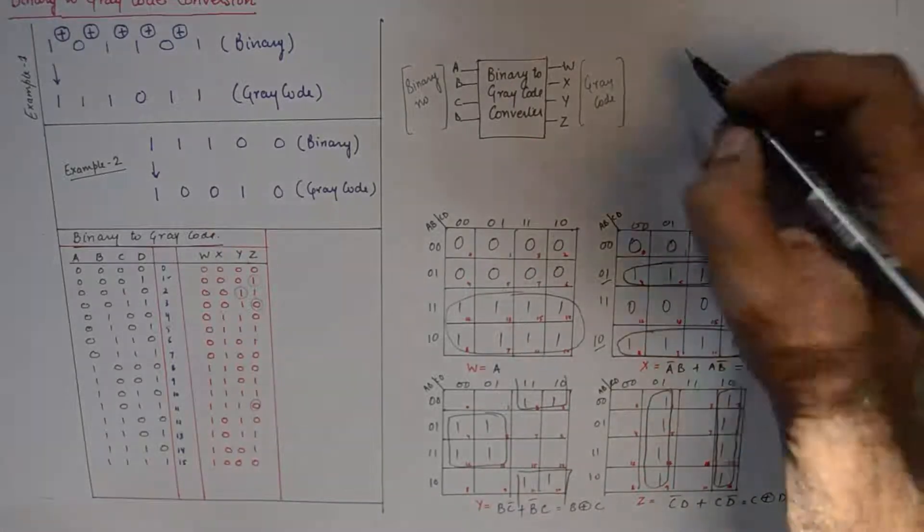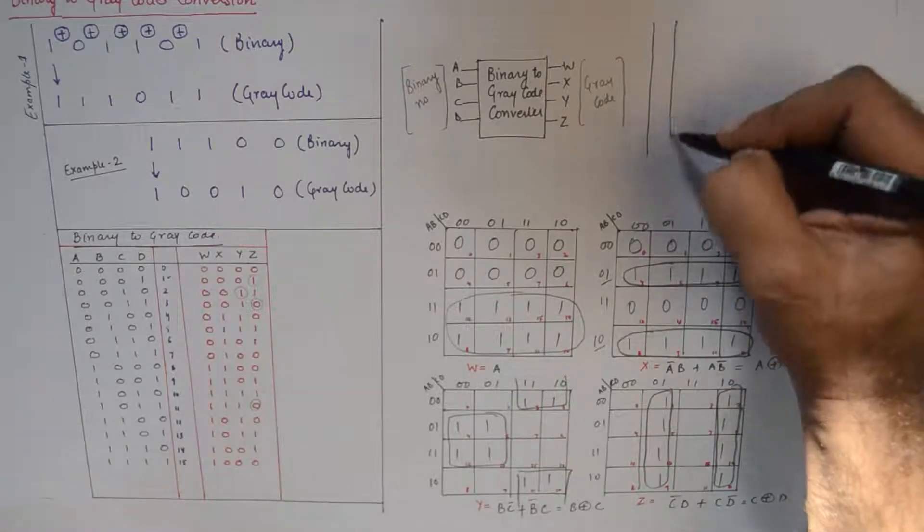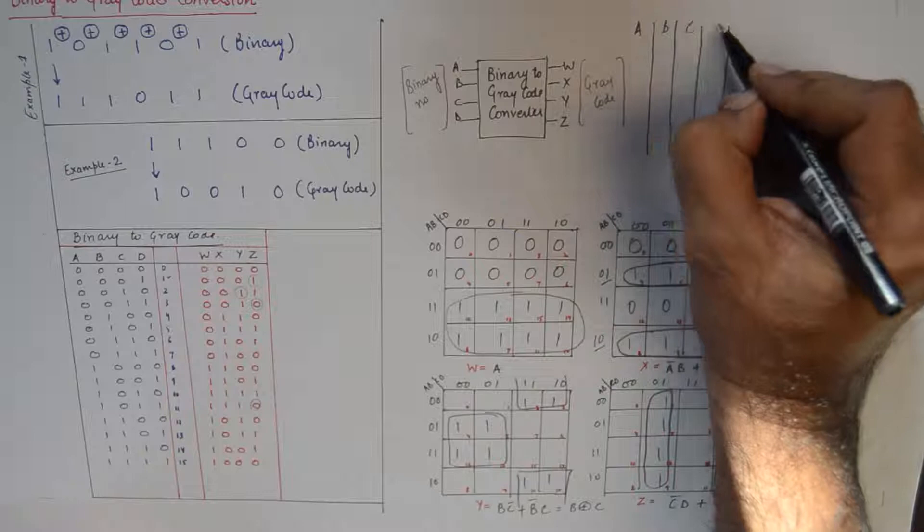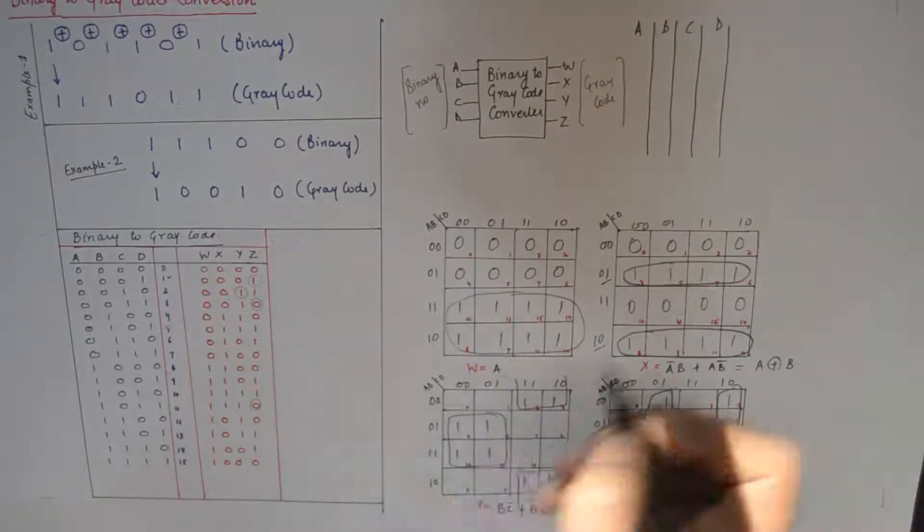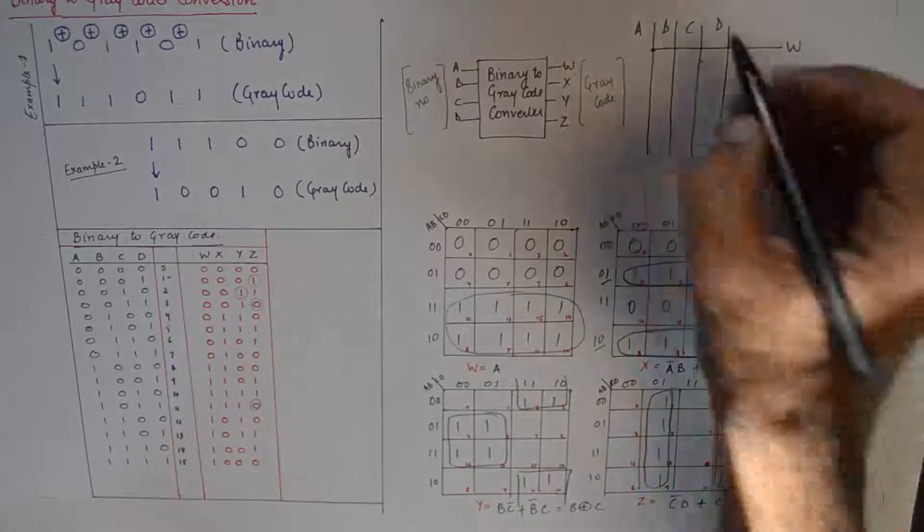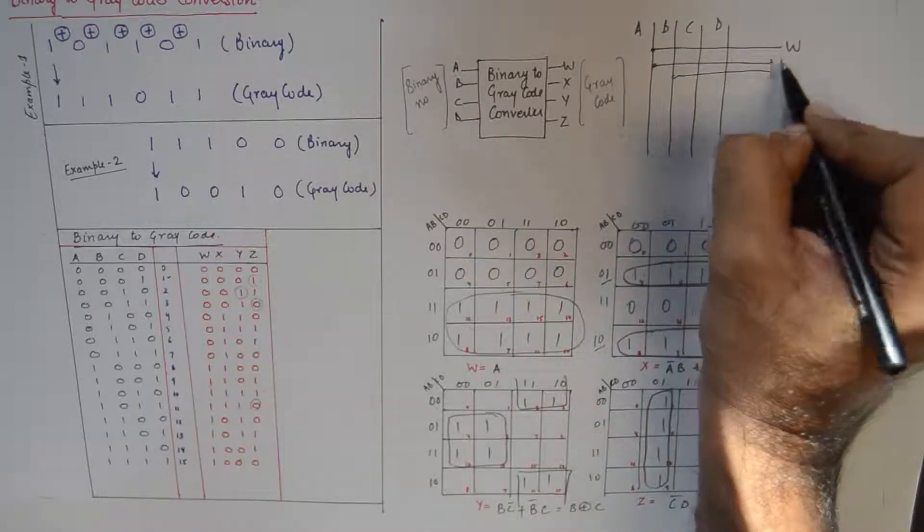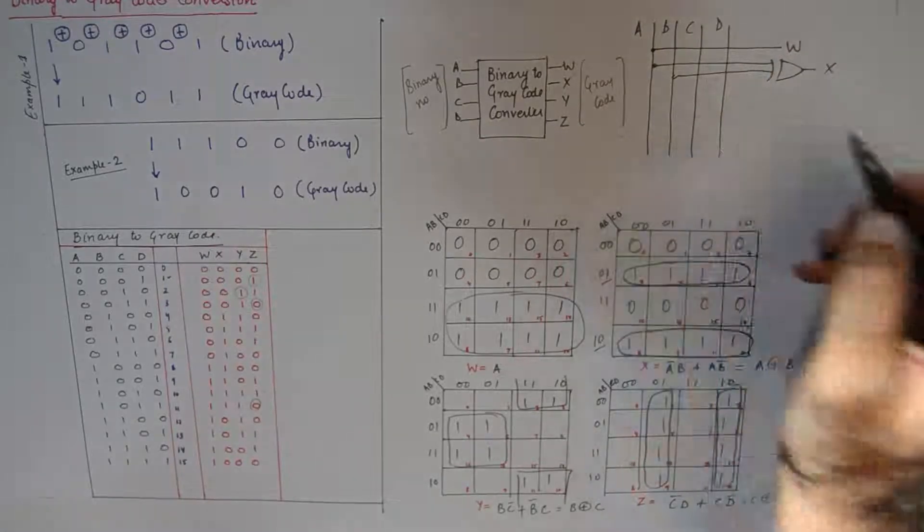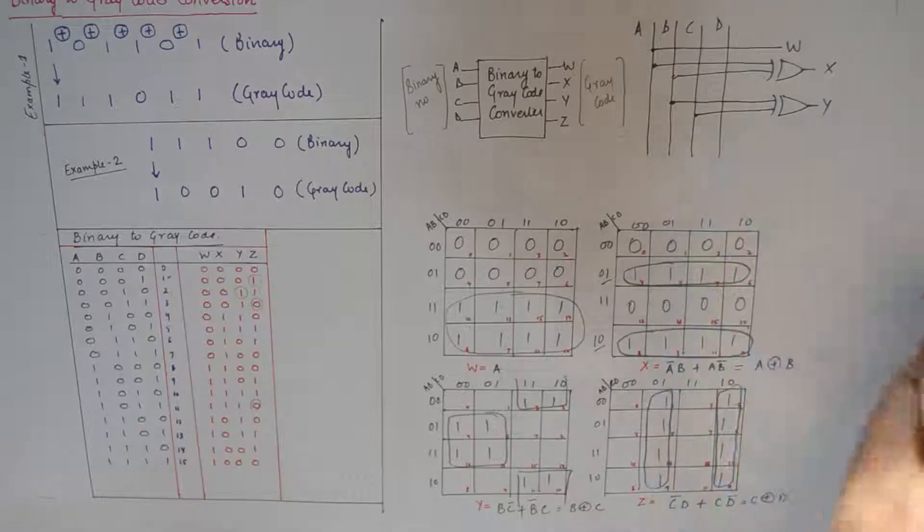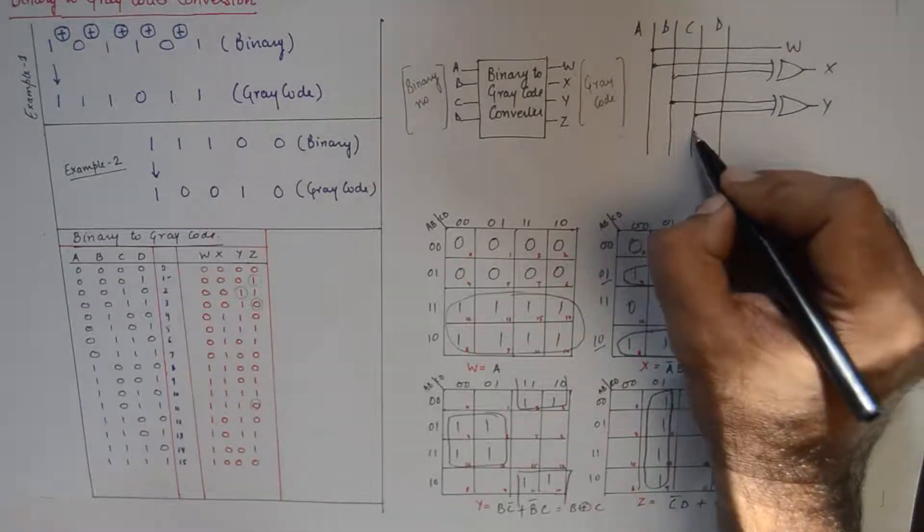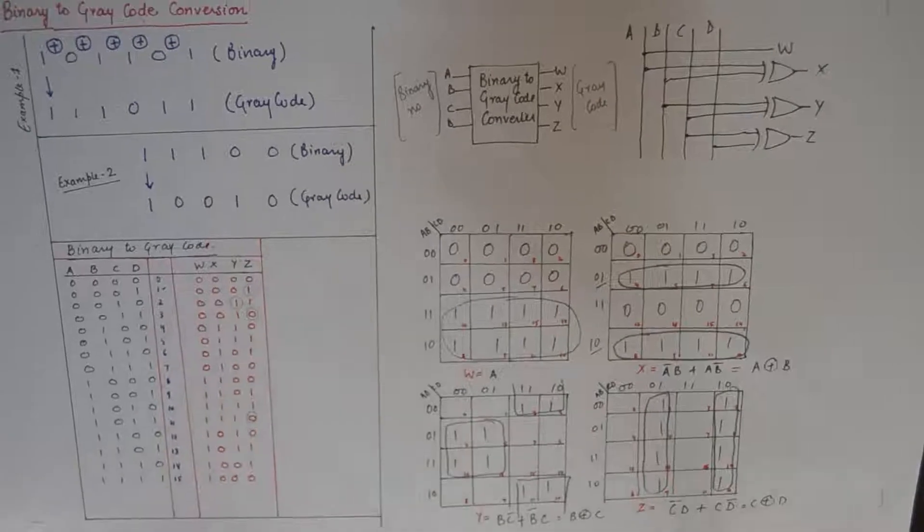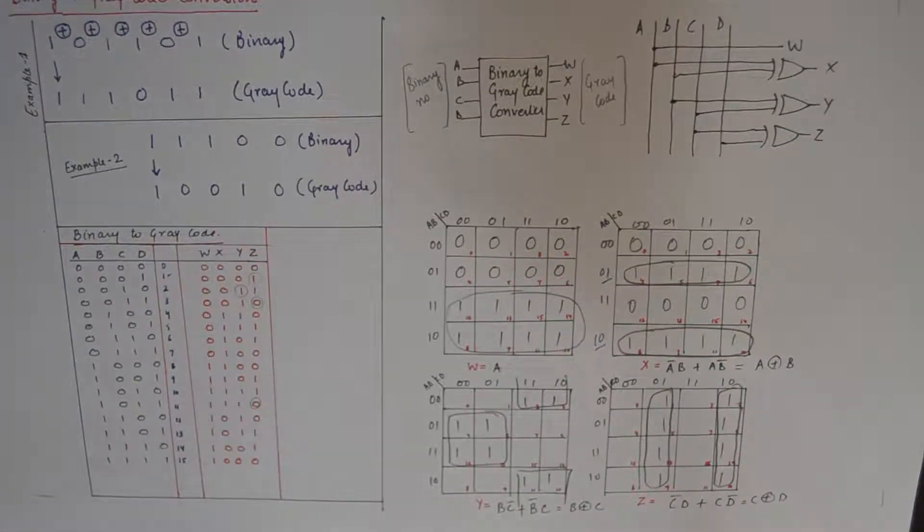So if we were to make the logic circuit for this, we'll specify a, b, c, and d here as input. And we know that w is obtained directly from a, then x is obtained from a XOR b, y is obtained from b XOR c, and z is obtained from c XOR d. So this becomes our logic diagram, the gate implementation of binary to gray code converter.